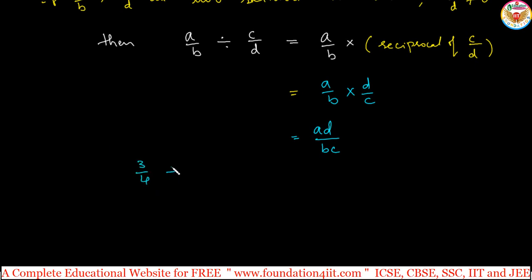So 3/4 is one number divided by 5/12. 3/4 divided by 5/12, 3/4 is a fraction. We can write now 3/4 as it is. The division symbol you must keep it as into, then 5/12 reciprocal, that is 12/5.